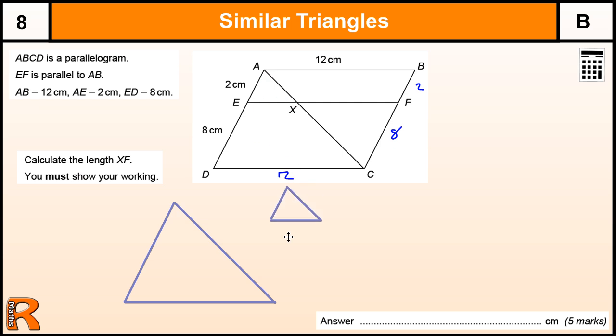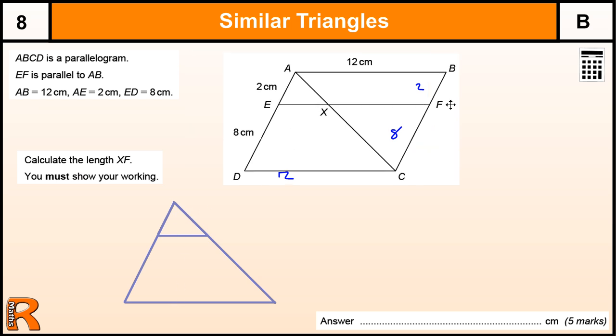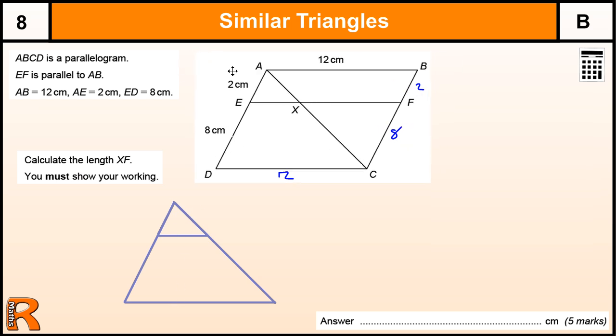They are similar triangles because they share the same angles. This side and this side are parallel. It tells you EF is parallel to AB. So, they are parallel and therefore the angles are the same.